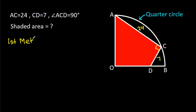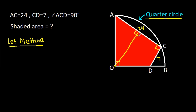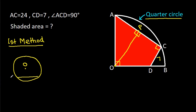The first method: since it is a quarter circle, this angle will be 90 degrees. Now, from point O, if we draw a perpendicular on AC — suppose this point is P — then in any circle, from center O and any chord AC, if we draw a perpendicular, then AP will be equal to CP.